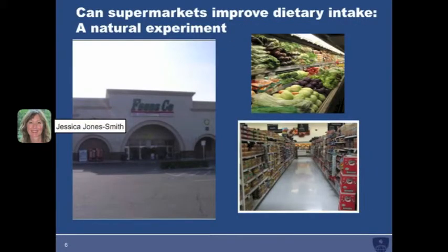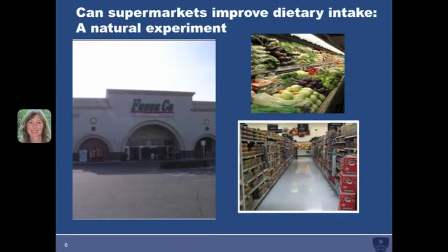In a second natural experiment I'm examining whether the introduction of a large supermarket in a lower income neighborhood can result in improved dietary intake for neighborhood residents. I'm collecting dietary intake from residents in the neighborhood that will get the supermarket as well as residents in a demographically similar neighborhood that will not get a supermarket and will instead serve as a comparison group. I'm going to survey residents in both neighborhoods before and after the supermarket opens in order to determine whether dietary intake changes as a result of the supermarket.